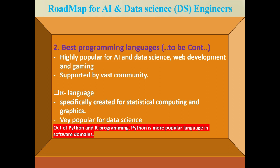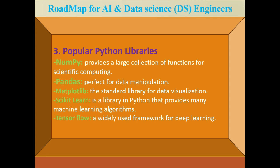In my view, students should go with Python if they are preparing for AI and data science. Next, what libraries are students required to go through? There are some important libraries: NumPy, Pandas, Matplotlib, Scikit-learn, and TensorFlow. Students are required to go through all these libraries.